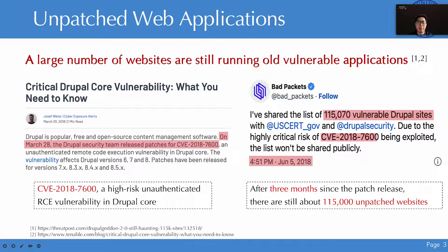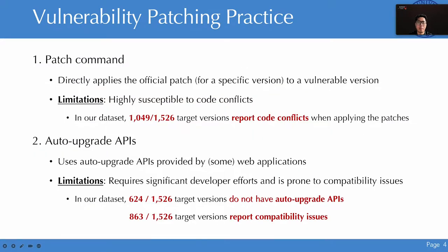In the real world, there are a large number of websites still running old version applications. According to news reports, after three months since the patch for the high-risk vulnerability was released, there are still around 115,000 websites threatened by the vulnerability. Inspired by this, we conducted a study but found that deploying patches on old versions was not a trivial task.